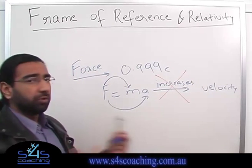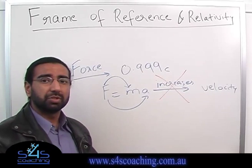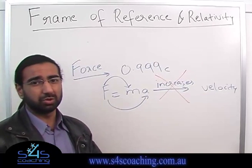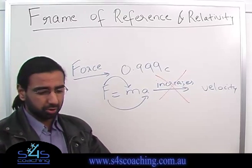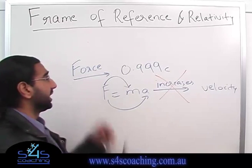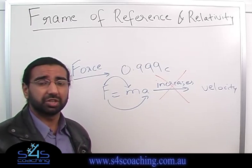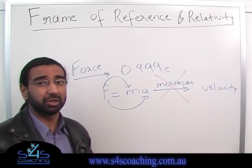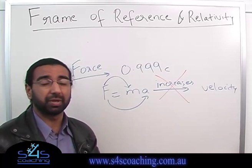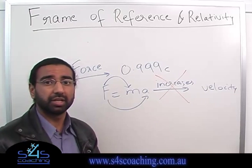Before Einstein came up with these concepts, we would consider mass to be absolute, time to be absolute, and even length to be absolute. But after Einstein's theory of relativity, all of these three concepts are now relative — they can change depending on the observer. That's all for today.